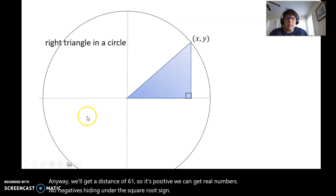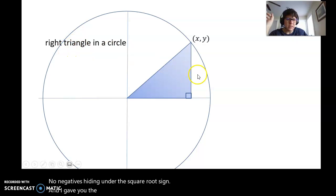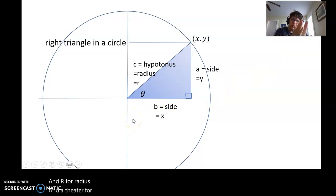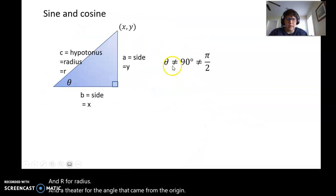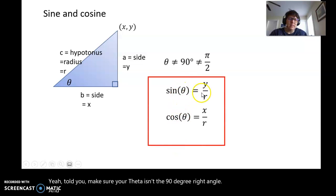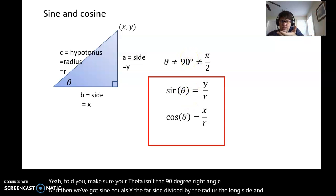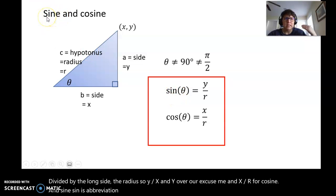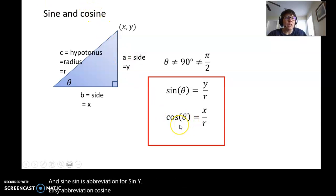I gave you the formula using a right triangle in a circle where we had a Y side and an X side and R for radius and theta for the angle from the origin. Make sure your theta isn't the 90 degree right angle. Then we've got sine equals Y, the far side divided by the radius, and cosine is the closer side divided by the long side. So sine is Y over R and cosine is X over R. Sine is abbreviated s-i-n, cosine gets abbreviated c-o-s.